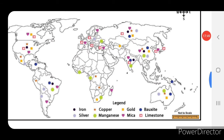Here a map is given showing where non-renewable resources are distributed. It shows iron, silver, copper, manganese, gold, mica, bauxite and limestone and the places where they are found.